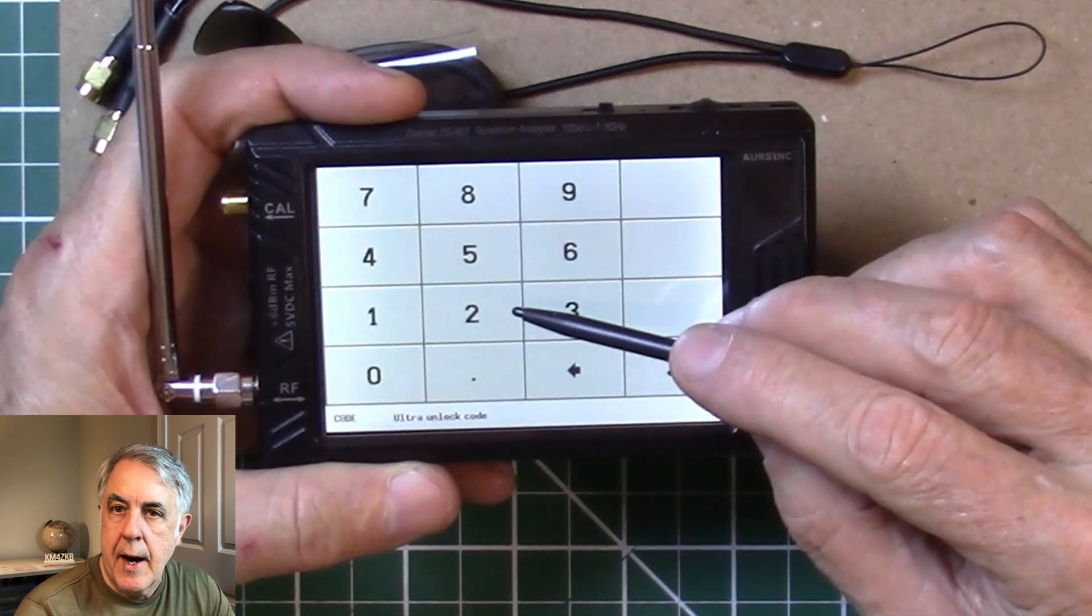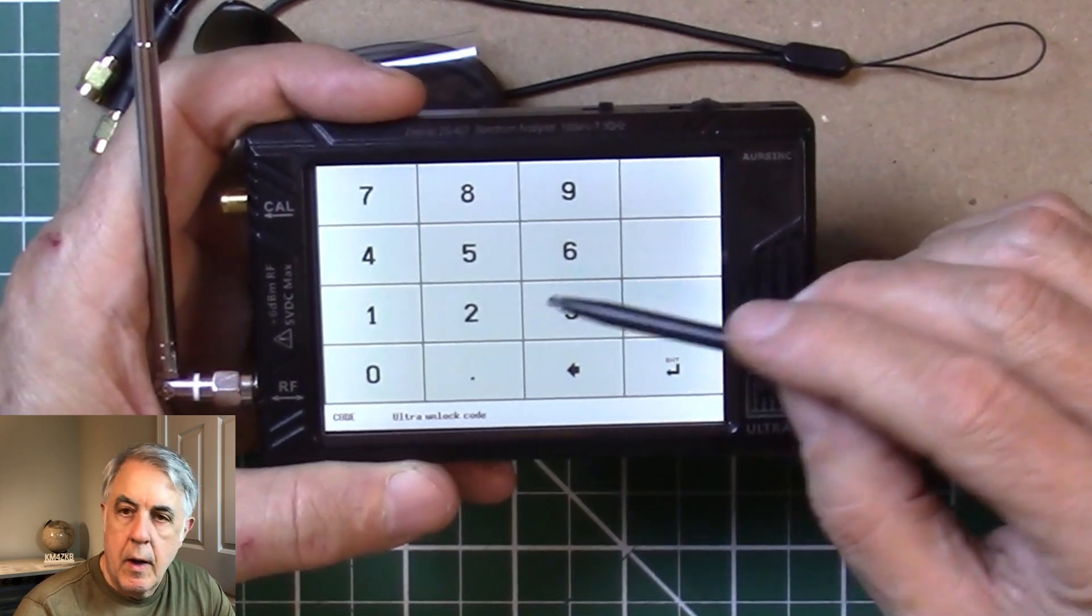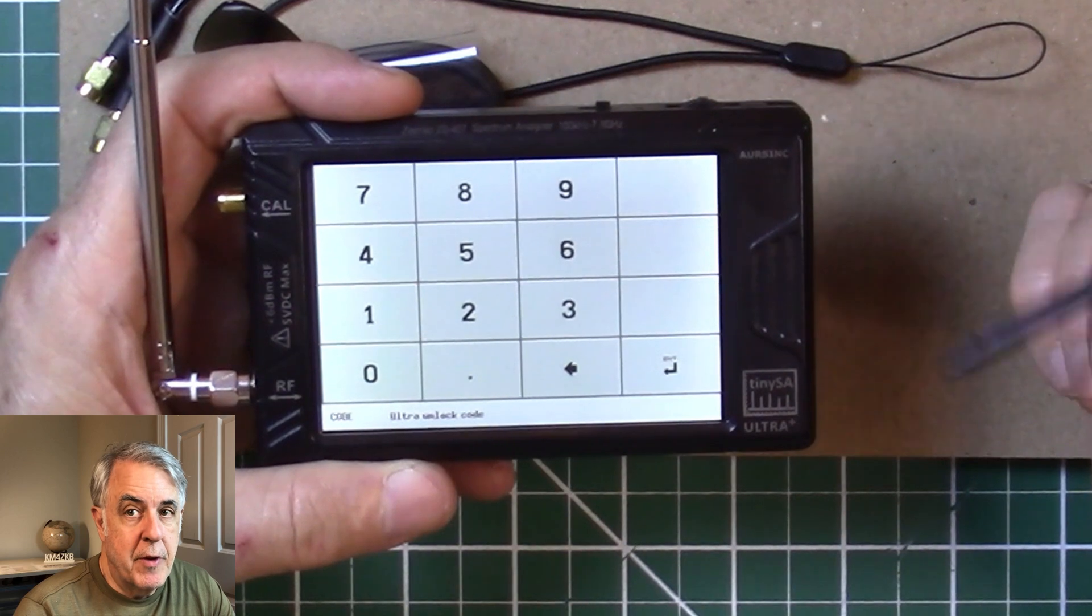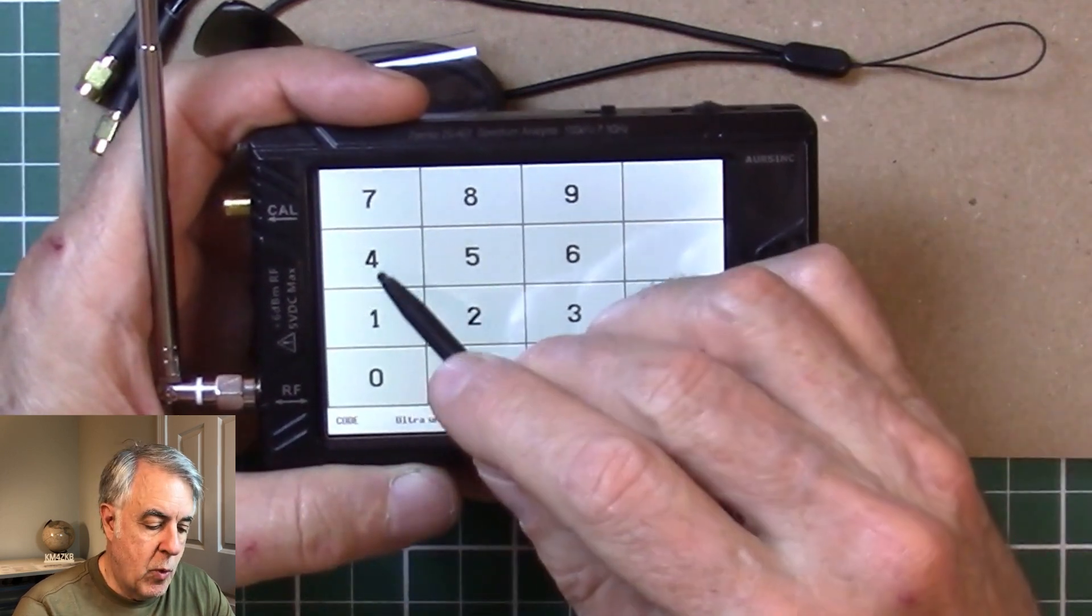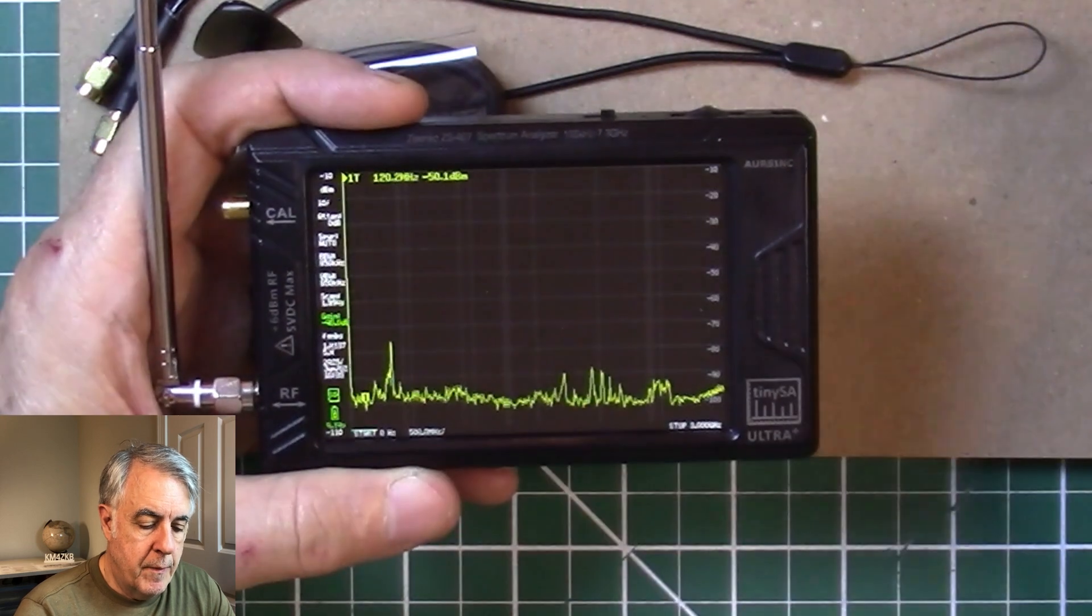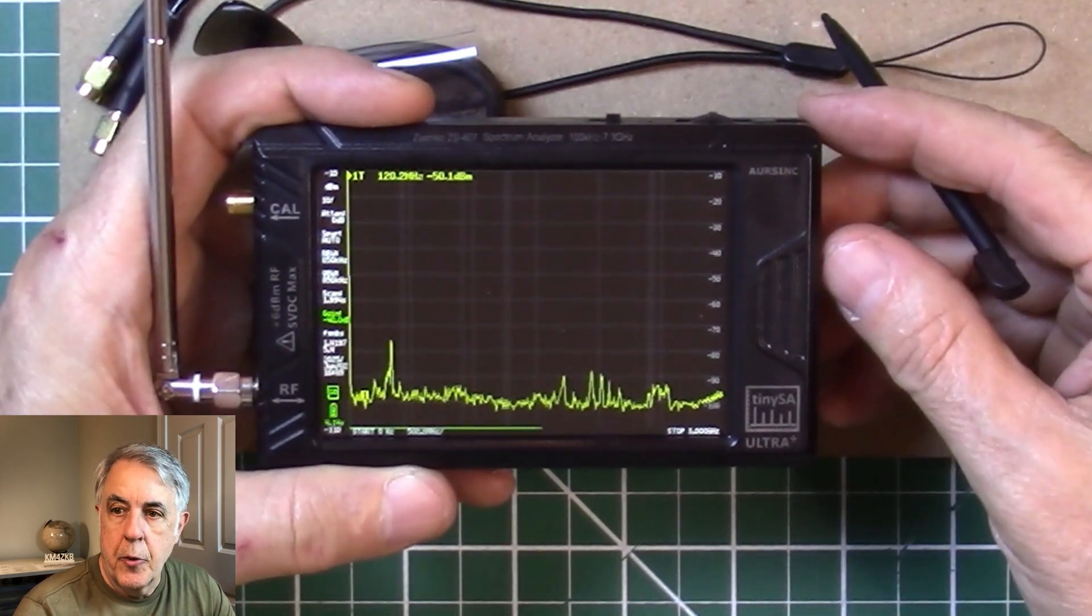You can see here you got enable ultra. I've already got it enabled here, but I can disable it. I'm going to go back in, go into more, and enable ultra, and it says to visit the tiny SA org because there's a code that you have to enter. So the code is just four, three, two, one, hit enter, and it goes into ultra mode.